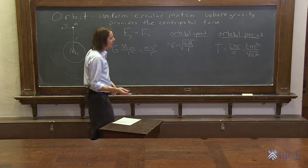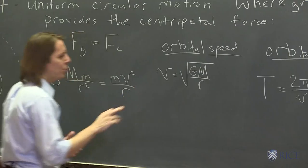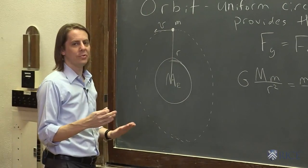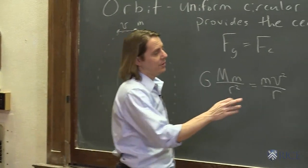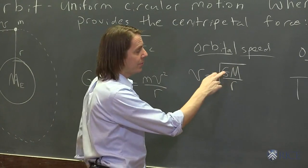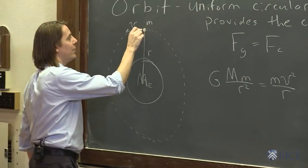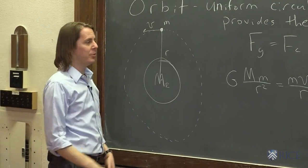So one thing we can see from these is that if you want to have an orbit at a certain radius, you really don't have a choice of speed. Right? Because big G is a constant. Big M is a constant. The mass of the Earth and the universal gravitational constant. So if you want to be out here at this R, you have to be going at a certain V. You can't just be going at any speed.